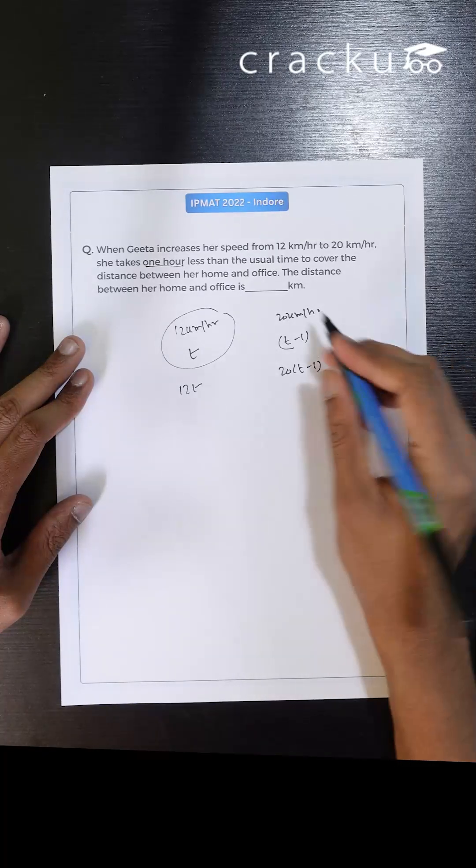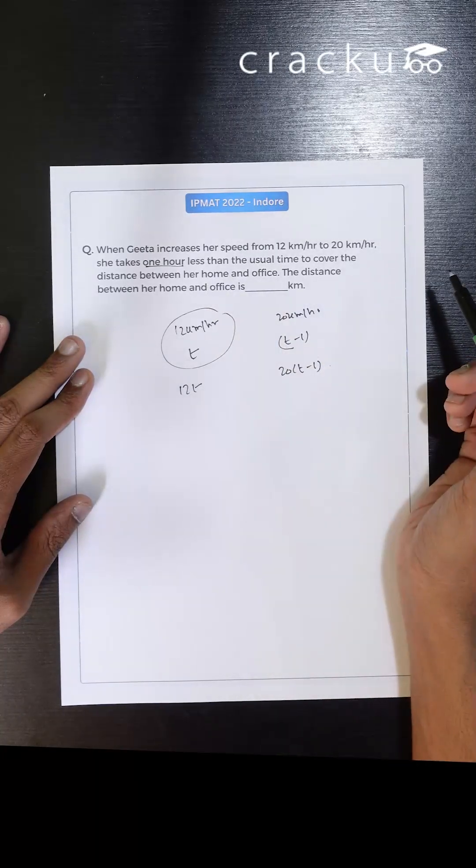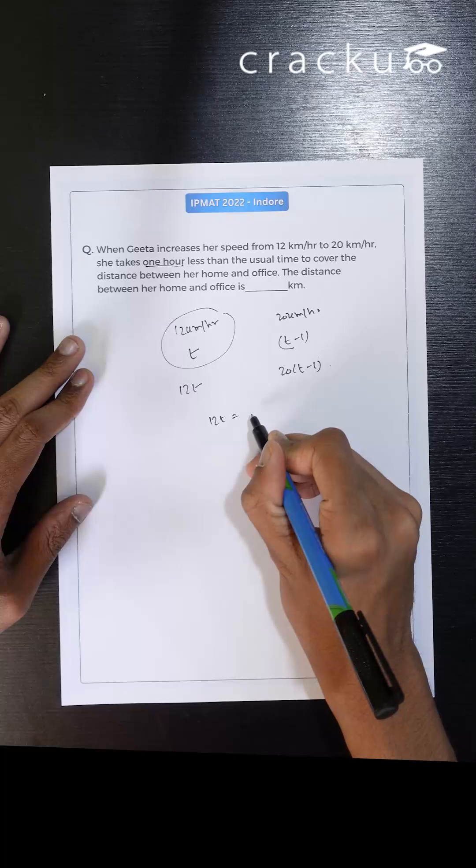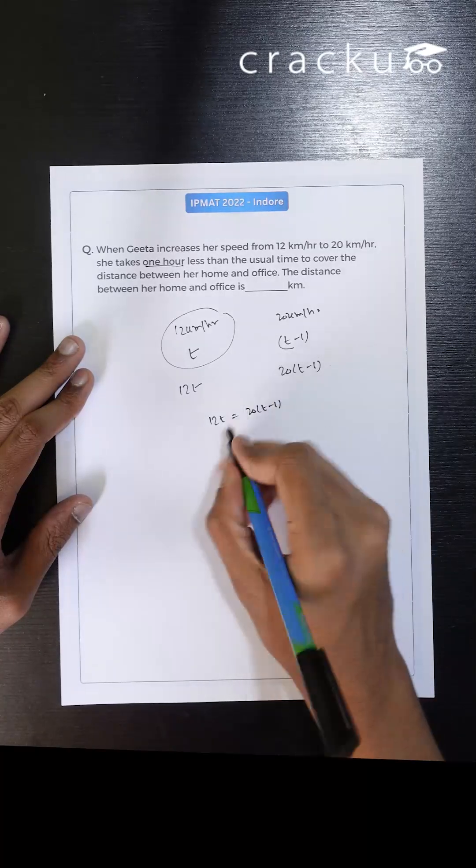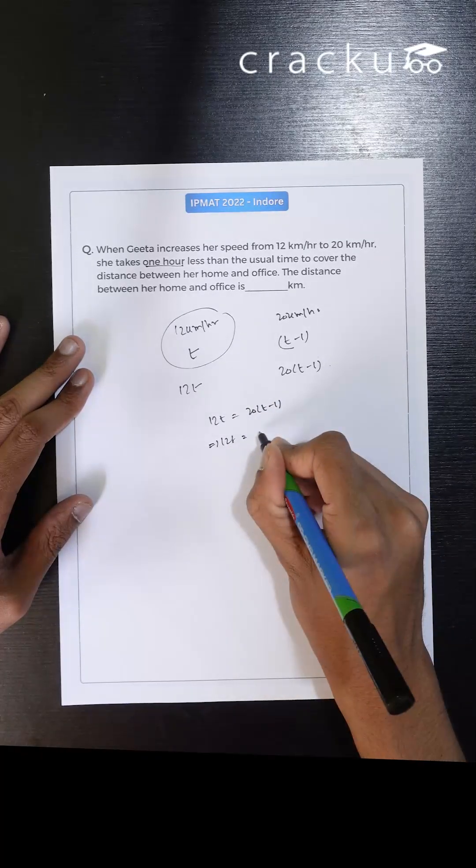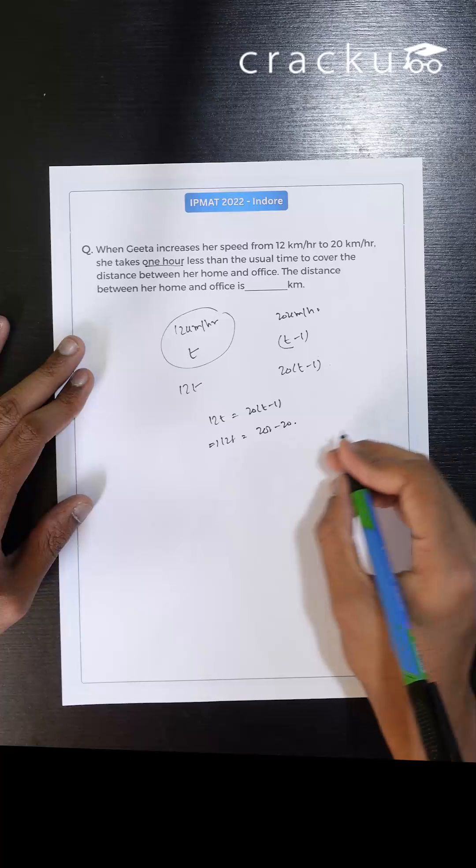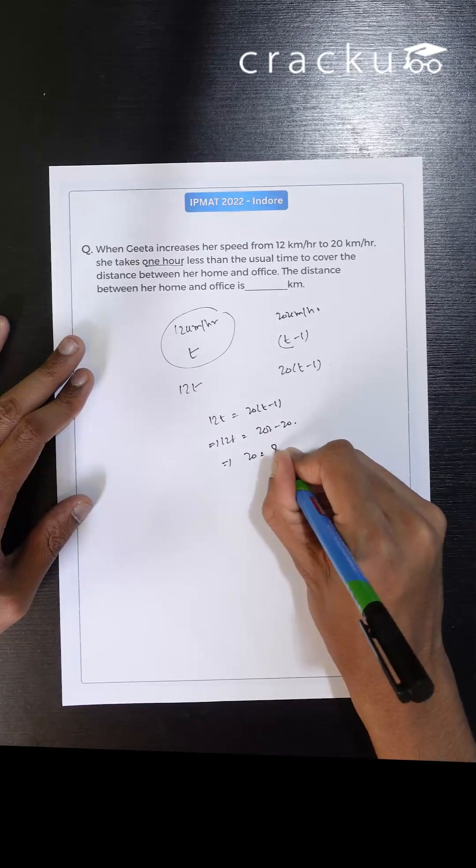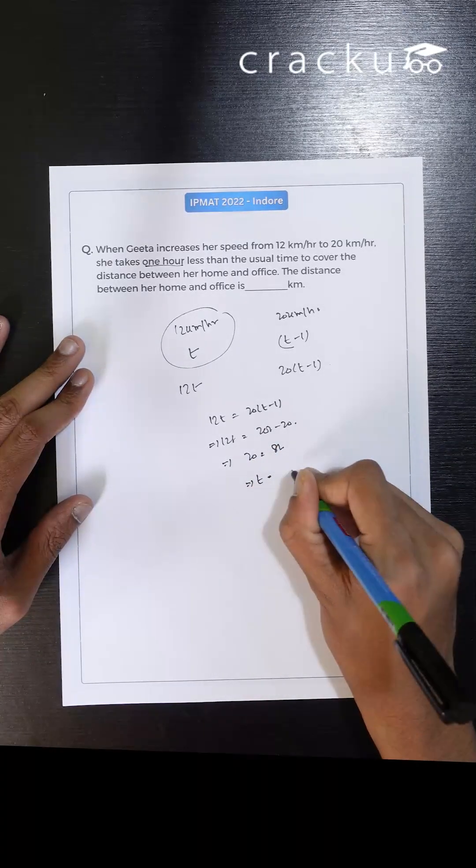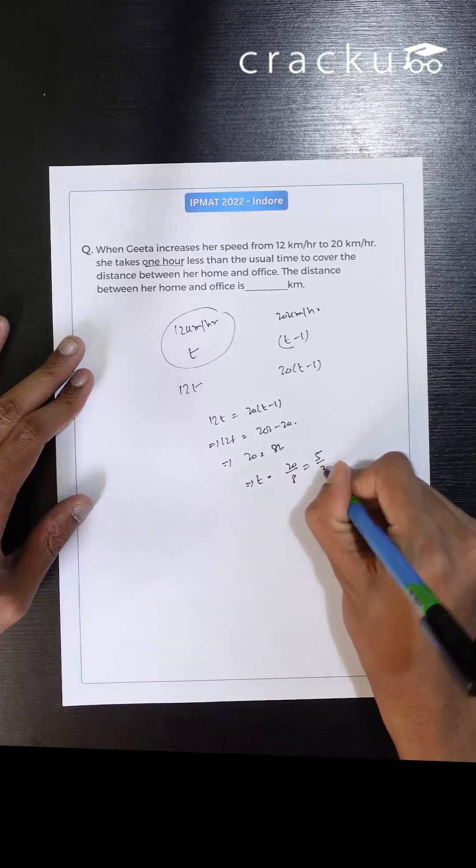Now both distances are the distances between her home and the office. So basically I can write 12t equals 20 into t minus 1, or 12t equals 20t minus 20. Or I can write 20 equals 8t, or I can write t equals 20 by 8, which is 5 by 2.